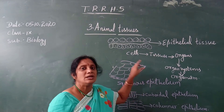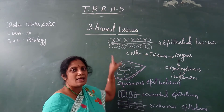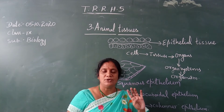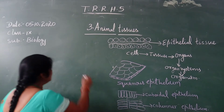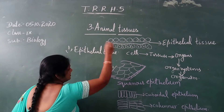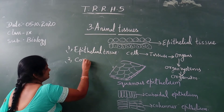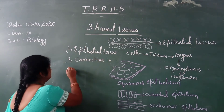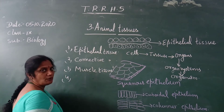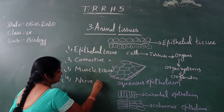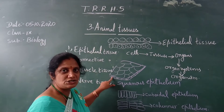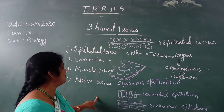This is the organization of life. Today we are going to discuss what animal tissues are. Like plants, animals also have four major types of tissues. The first one is called epithelial tissue, the second is connective tissue, the third is muscle tissue, and the fourth is nerve tissue.